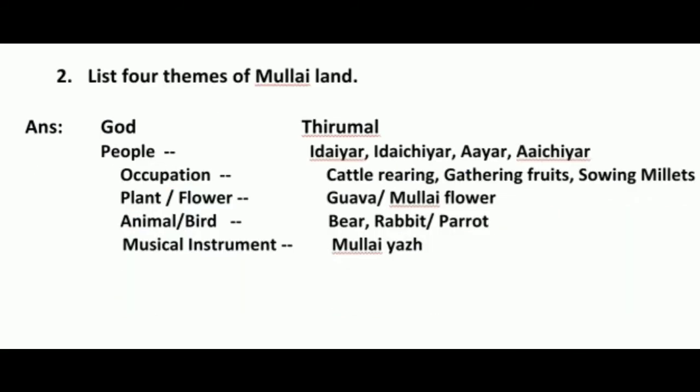Next: List four themes of Mullai land. God - Thirumal. People - Idaiyar, Aachiyar. Occupation - Cattle rearing, gathering fruits, sowing millets. Plant and flower - Goa and Mullai flower. Animal and bird - Bear, Rabbit, and Parrot. Musical instrument - Mullai Yal.